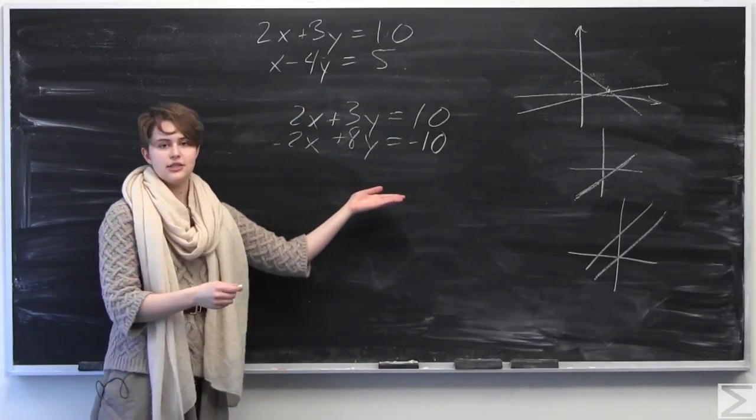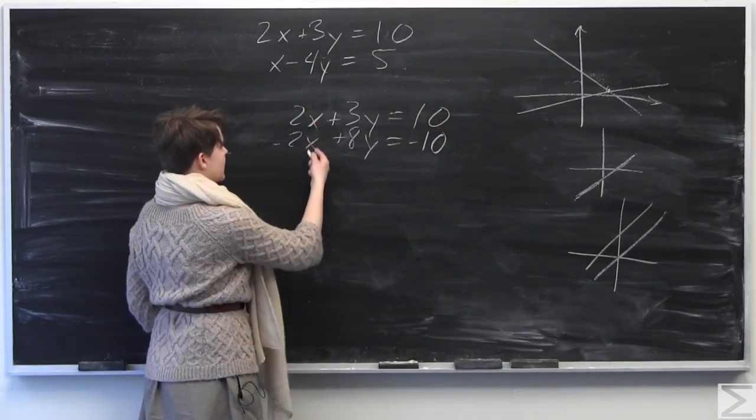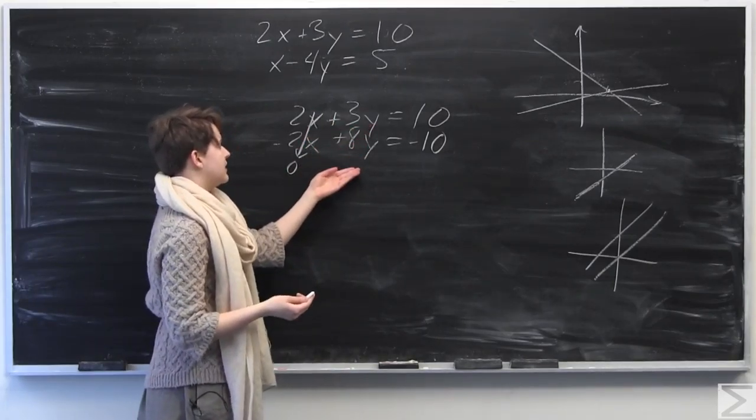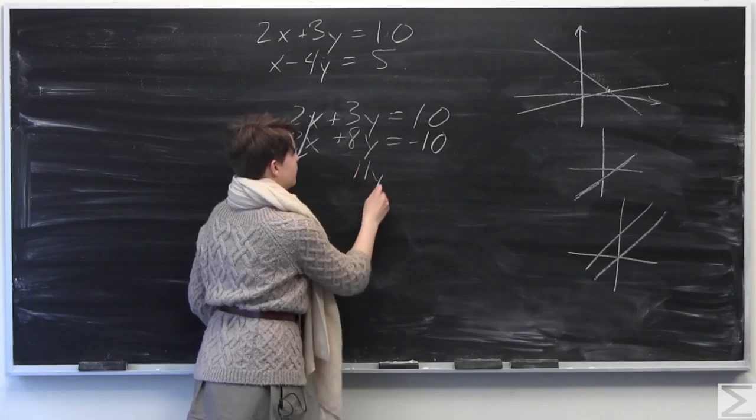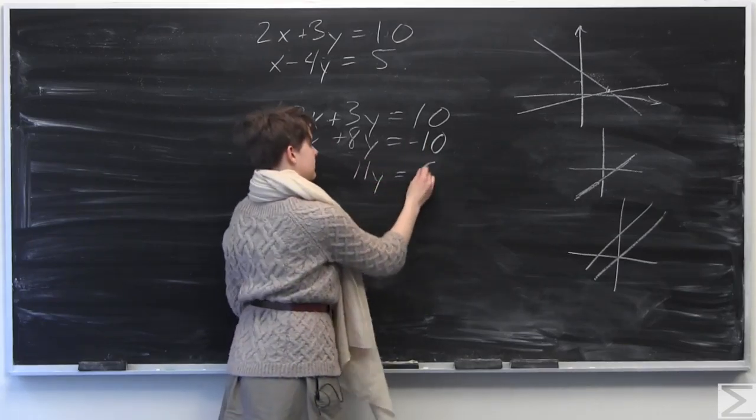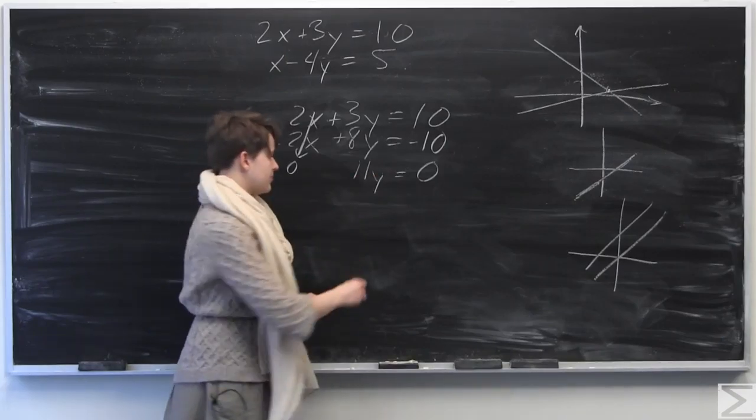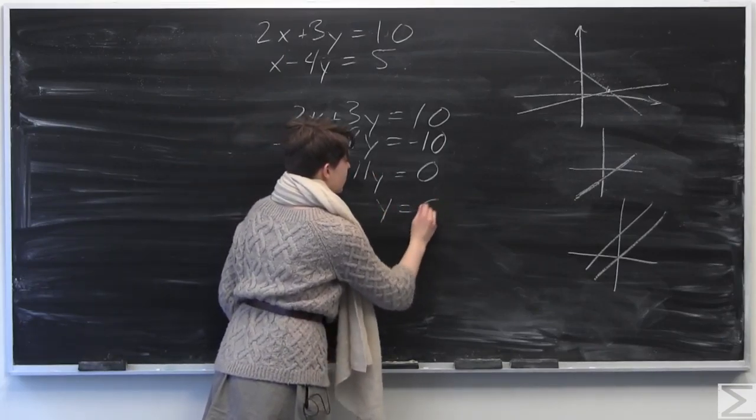OK, so I'm going to go ahead and add these equations together. So 2x minus 2x just goes to 0. There's no x's. 3y plus 8y is equal to 11y. And 10 minus 10 is going to be equal to 0. So now we have 11y is equal to 0. We can divide by 11. And we find that y is equal to 0.